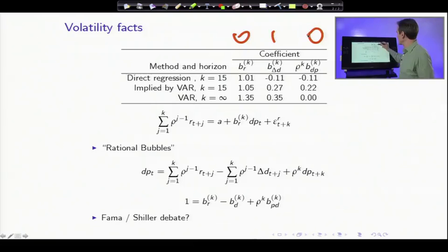The conventional view of things would say we'd see zero, one, and zero. Prices are high because people expect higher dividends. It's not that. The facts are it's all variation in expected returns.